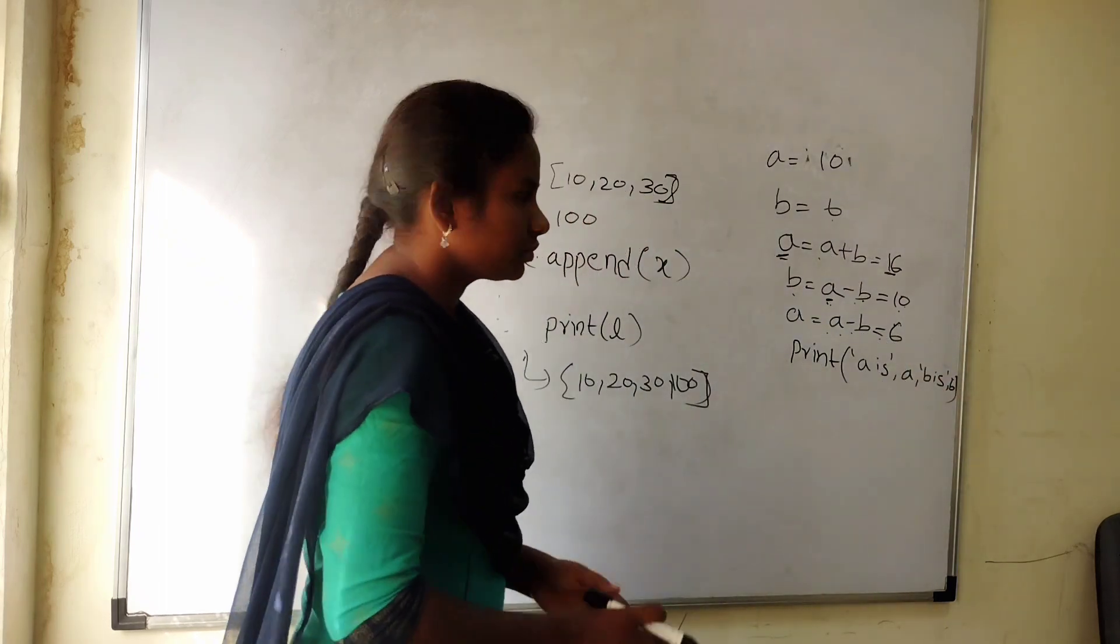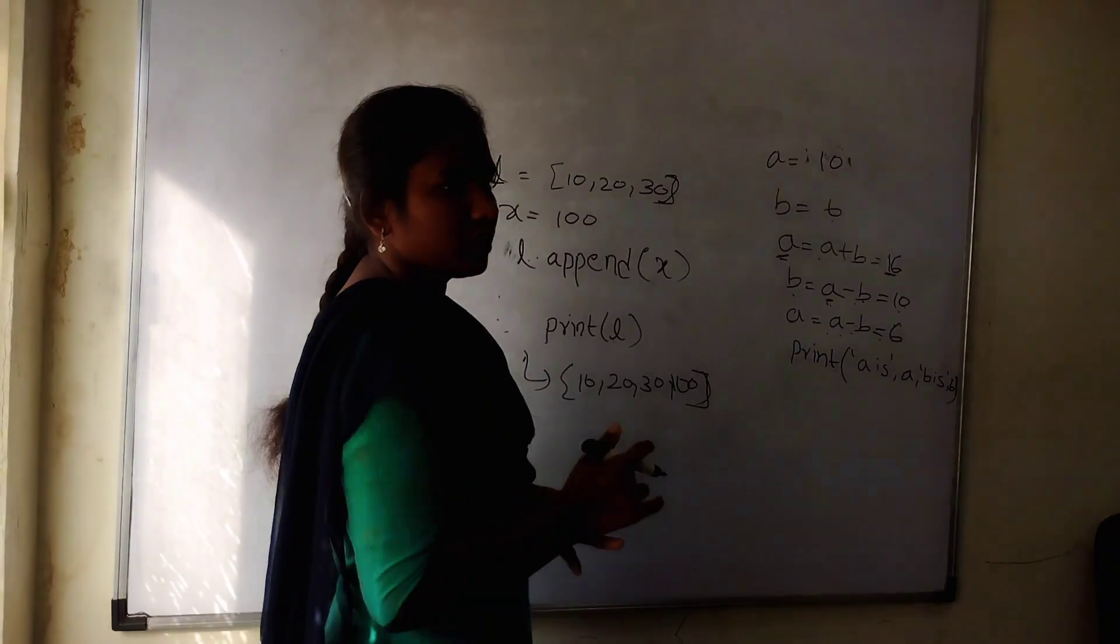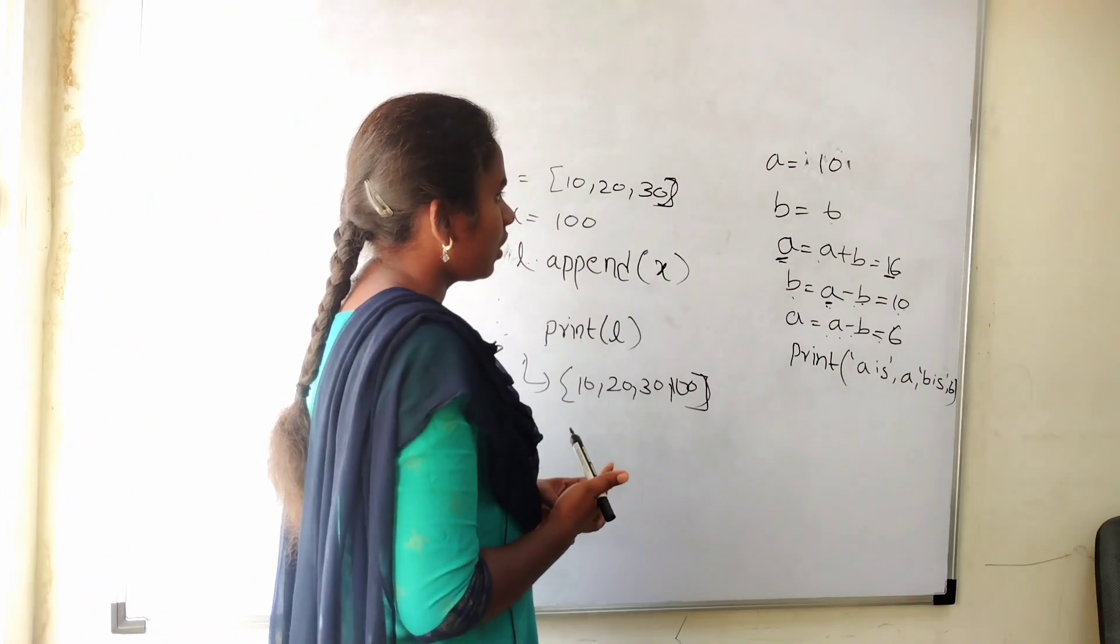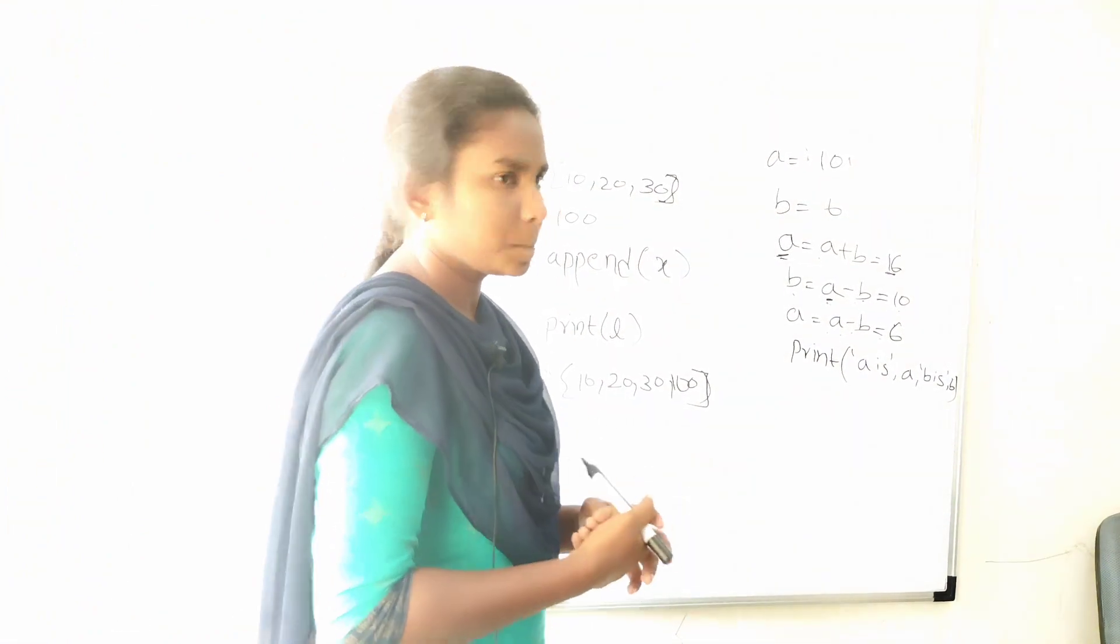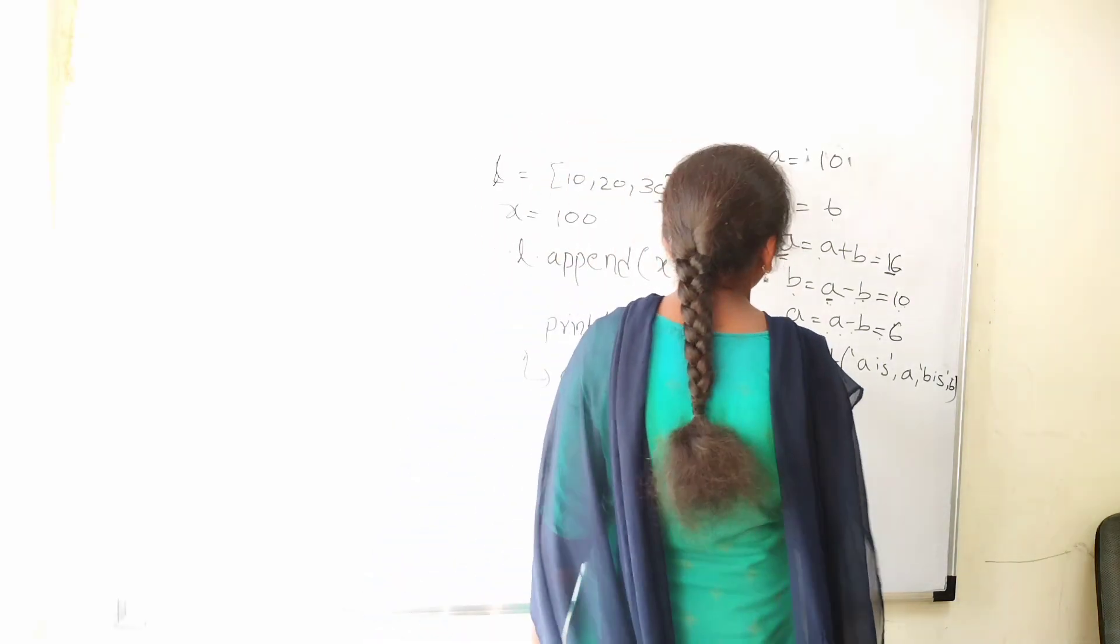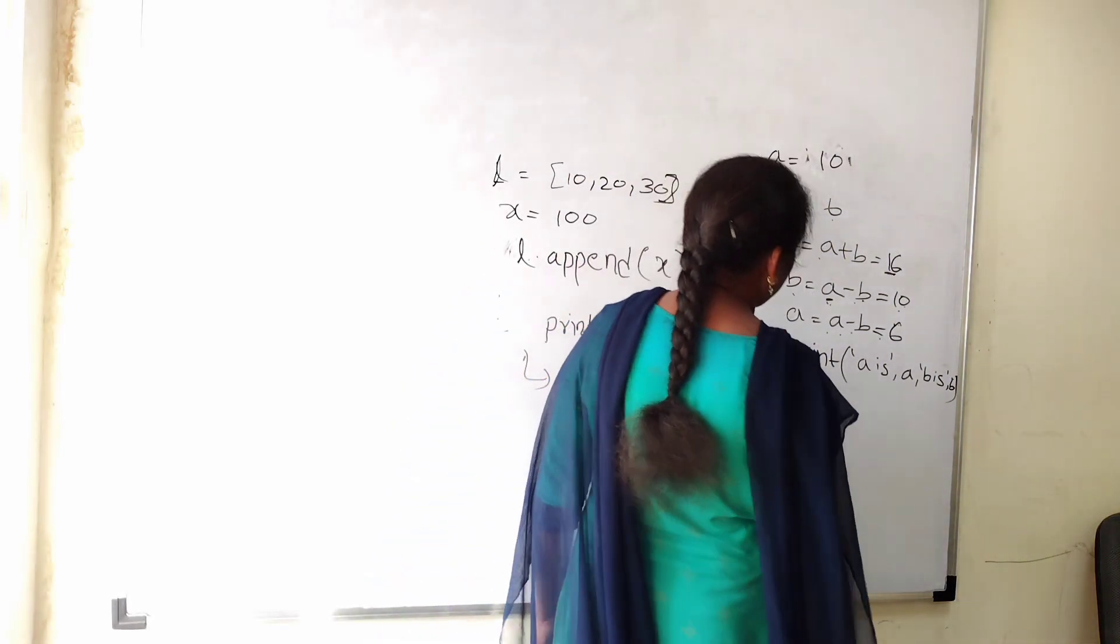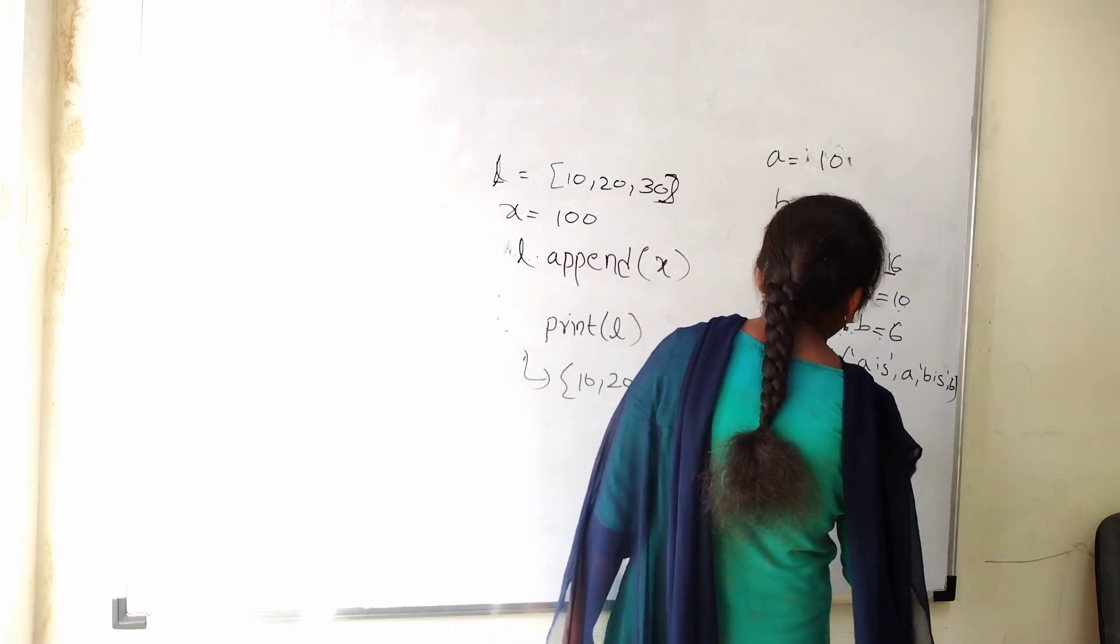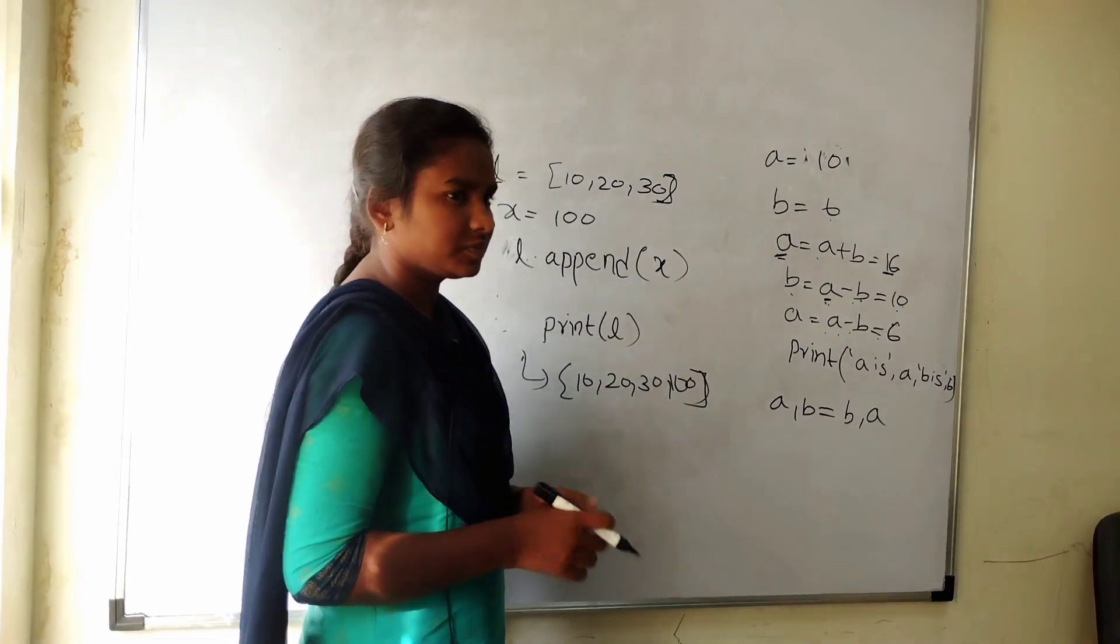Is there any other ways? Yes sir. We use temporary variable. Without using temporary variable, is there any other way? For example, you write this. I will tell you. You write A comma B. A comma B equal to B comma A. Will it swap or not? Swaps sir. Are you sure about it? Yes sir. That's good. Nice.